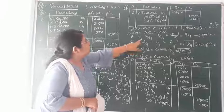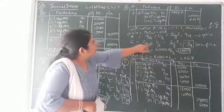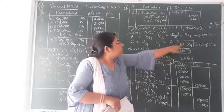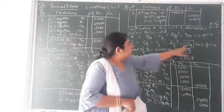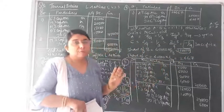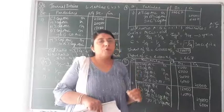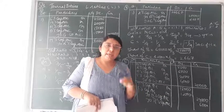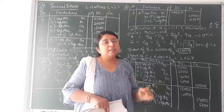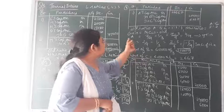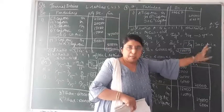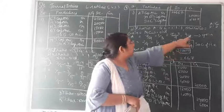For partner C: new ratio 2/9 minus old share 1/3. Taking LCM as 9: 2/9 minus 3/9 = negative 1/9. Whenever the gain formula gives a negative answer, it is called sacrifice by that partner. This was already discussed in chapter 4 on reconstruction of partnership — applying the gaining ratio formula, if the answer comes negative it is called sacrifice. So partner C is sacrificing and partner A is the only one gaining.